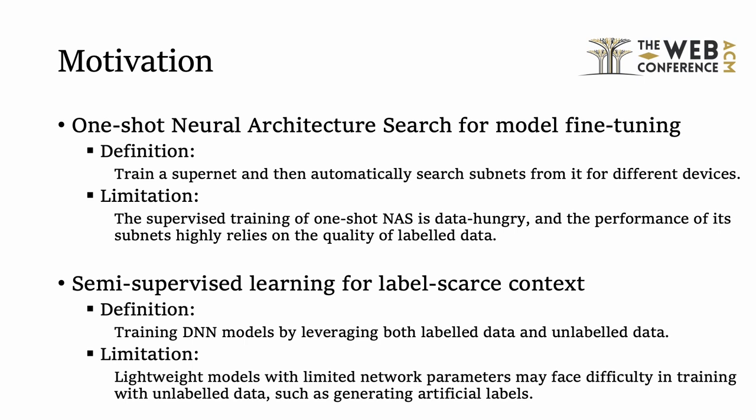To address the first challenge, one-shot neural architecture search tends to train a supernet and then automatically search subnets from it for different hardware devices. However, this method is data-hungry, which heavily relies on the quality of labeled data.